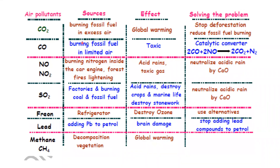This is a summary of air pollutants. Carbon dioxide — its source is the burning of fossil fuels such as coal, oil, and petrol. Burning any kind of fossil fuel produces carbon dioxide, and carbon dioxide can cause global warming.